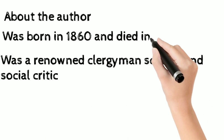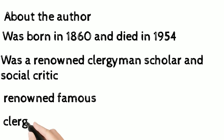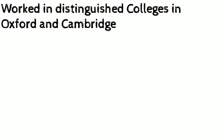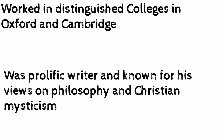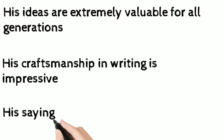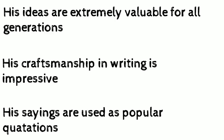This author is pretty good at bringing out the secrets of happiness in his writing, 'Happy People.' About the author: he was born in 1860 and died in 1954. He was a renowned clergyman, scholar and social critic — 'renowned' means famous, and 'clergyman' means pastor or father. He worked in distinct colleges at Oxford and Cambridge, was a prolific writer, and known for his work on philosophy and Christian mysticism. His ideas are extremely valuable for all generations, his craftsmanship in writing is impressive, and his sayings are used as popular quotations.